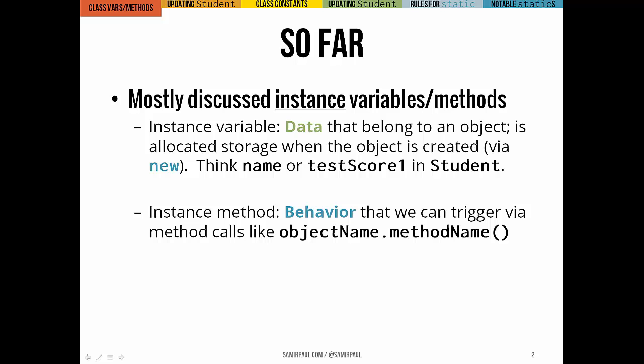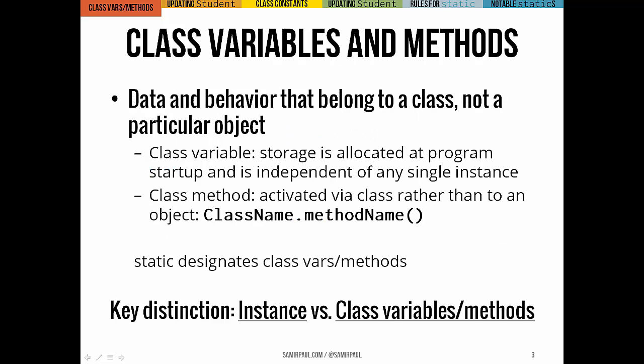You can see the syntax for that: the object name and then the method name itself. But in Java, we can also use class variables and methods. A class variable, just like it sounds, belongs to a class. Its storage gets allocated as soon as the program runs and it's independent of any specific instance of the class. We don't have to actually make an instance of the class in order to use a class variable or method. A class method gets called when we send a message to the name of that class — the syntax is class name dot method name — which is different from calling an instance method using the name of a specific object.